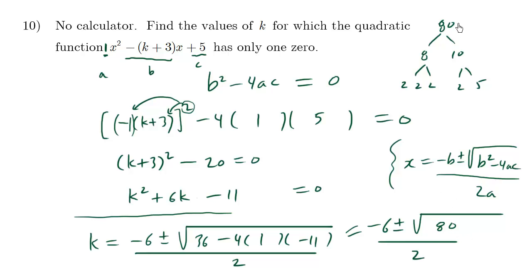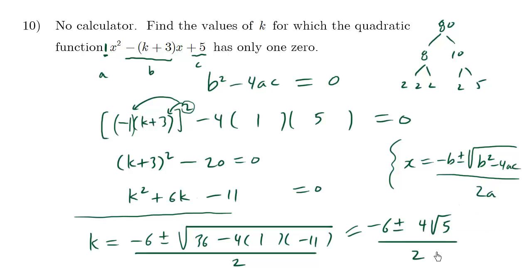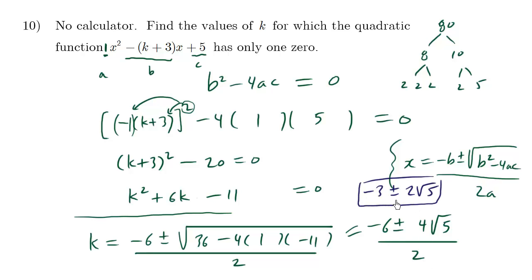Thinking about the radicand 80, you can break it down using a factor tree. 80 is 8 times 10, which breaks down further to 2 times 2 times 2 times 2 times 2 times 5. Grouping into pairs, they escape the radical, giving 2 times 2, which is 4, so root 80 is 4 root 5. Now dividing the numerator and denominator by 2: negative 6 becomes negative 3, 4 root 5 becomes 2 root 5, and the denominator becomes 1. So the answer is k equals negative 3 plus or minus 2 root 5.